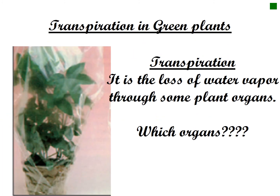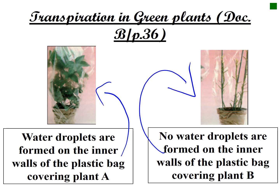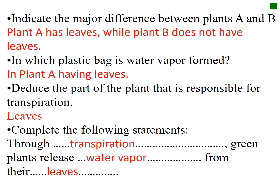What is transpiration? Transpiration is the loss of water vapor through some plant organs — specifically the leaves. In an experiment, water droplets form on the inner wall of a plastic bag covering plant A, which has leaves, while no water droplets appear in plant B, which is leafless. The plant part responsible for transpiration is the leaves.